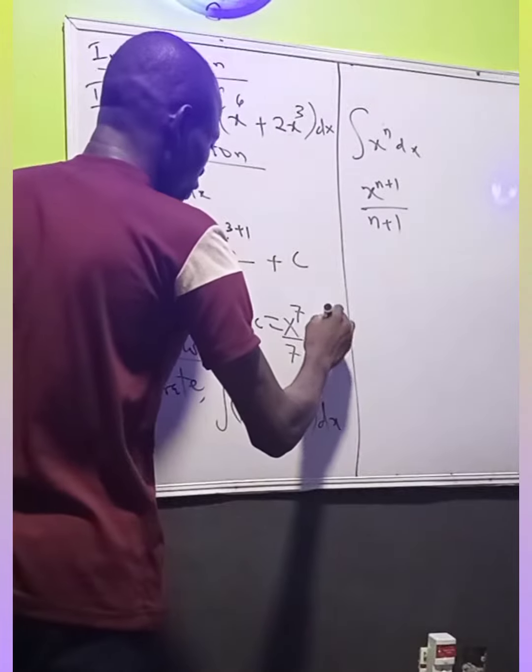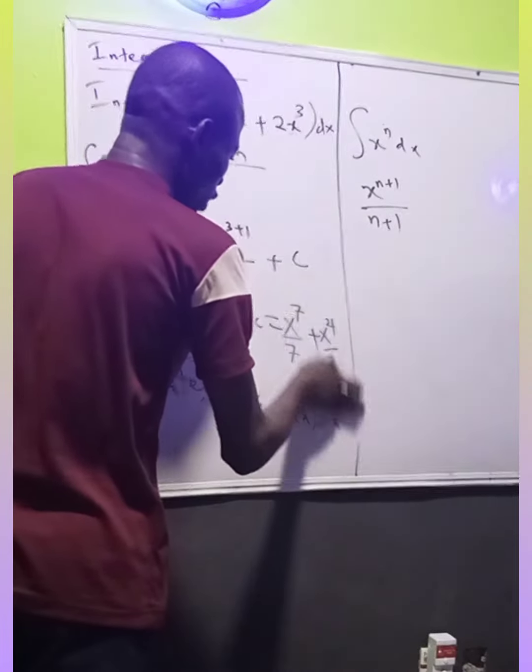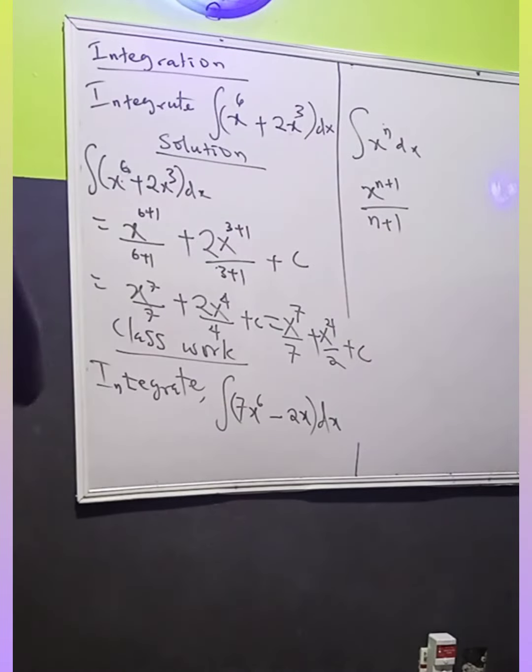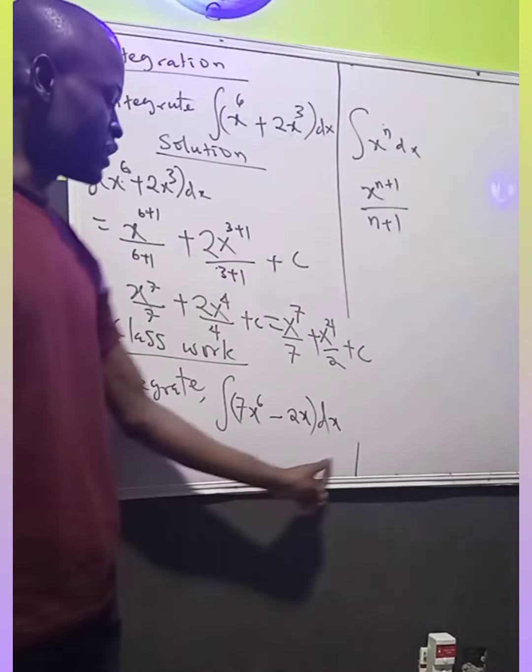So we are going to have x raised to power 4 over 2 plus the constant c. That constant c is called a constant of integration. Using the same approach, integrate this function.